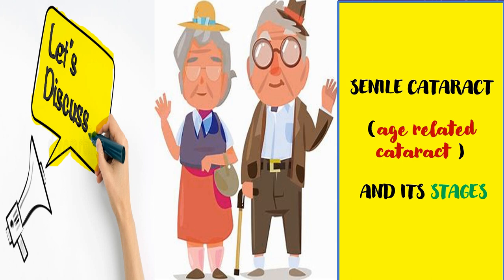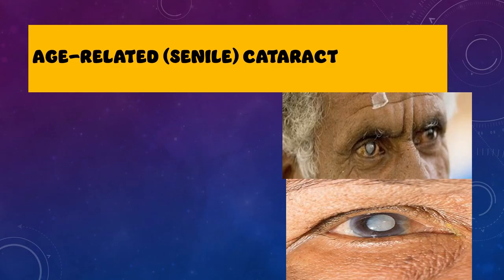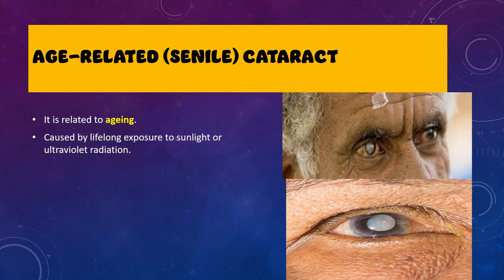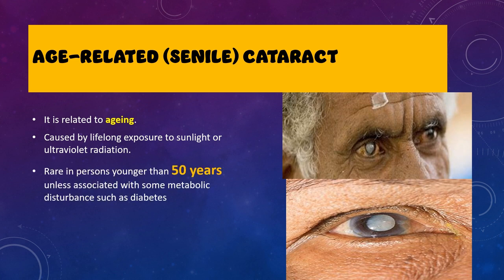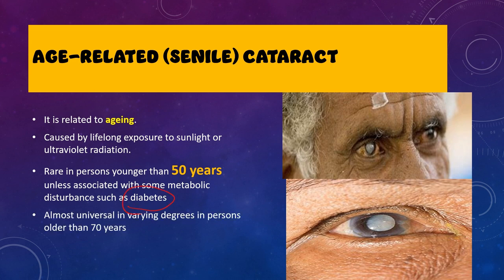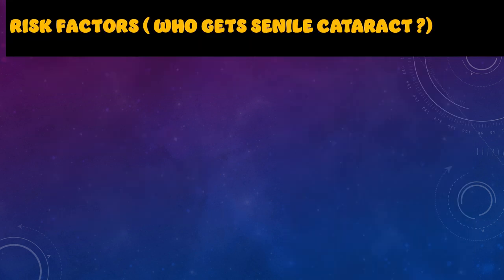Now let us discuss the main type of acquired cataract — the senile cataract, also called the age-related cataract — and its various stages. As the name suggests, it occurs as you age, mainly because of lifelong exposure to sunlight or UV radiation. It usually affects those over 50 years of age; it is very rare in people younger than 50, unless they have associated metabolic disturbances like diabetes mellitus. Above the age of 70, about 90% of people will have this age-related cataract.